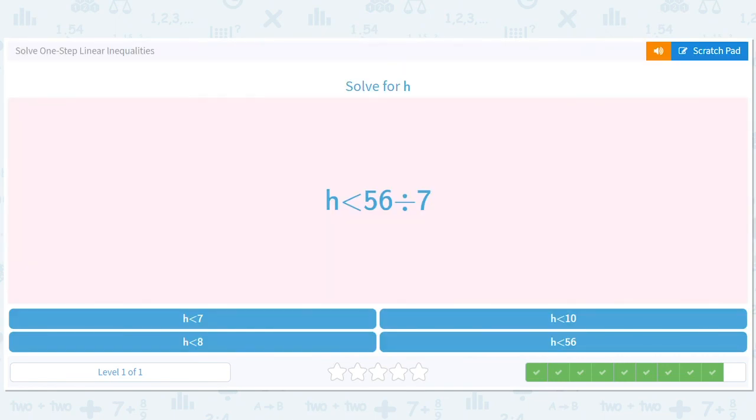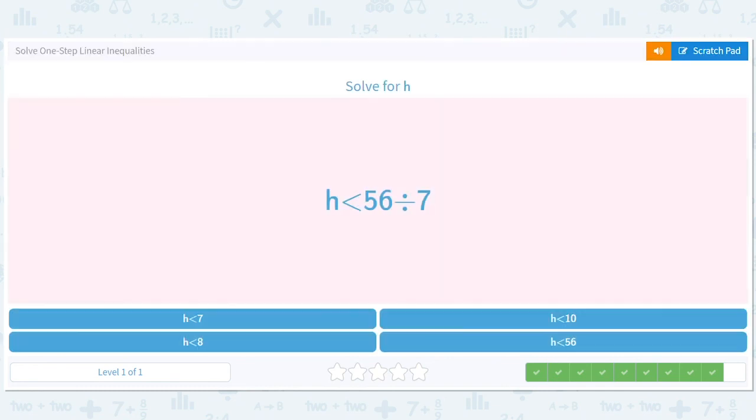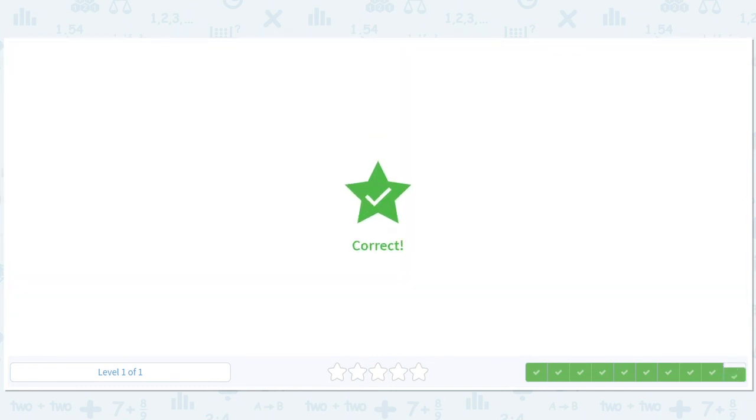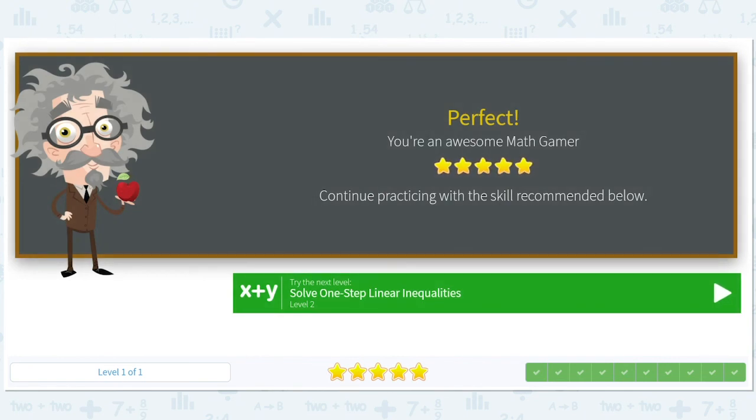And H is less than 56 divided by 7. That is 8. H is less than 8. And I hope you didn't eat that, because I loved it. All right. Bye.